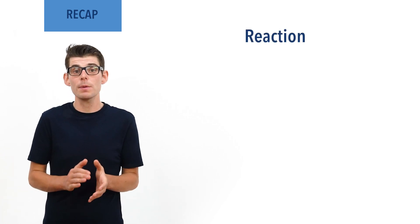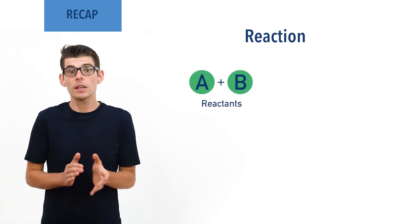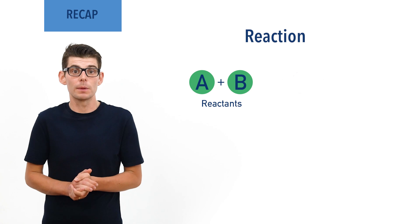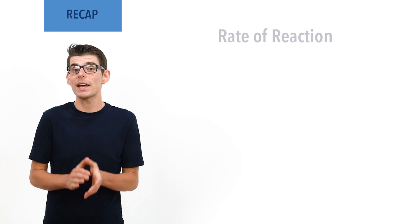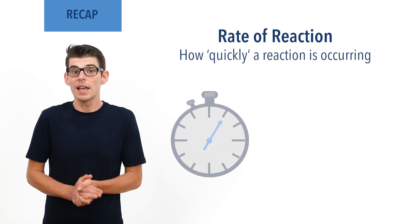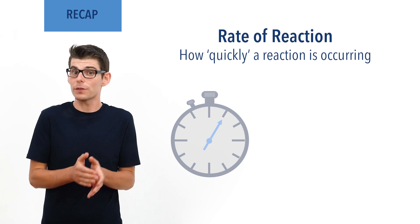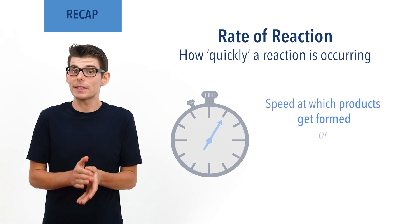Before we talk in detail about collision theory, there are a few essential ideas you need to be comfortable with. A chemical reaction describes a process where one or more substances, called reactants, come together and form different substances, called products. The rate of a reaction refers to how quickly it is occurring. This can either be considered as the speed at which products get formed in the reaction or the speed at which the reactants get used up.